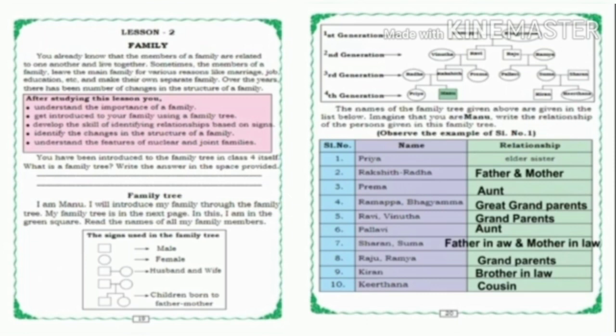Fourth generation: Rada, Rakshid, Prema, Pallavi, Summa, Sharan. And the relationships: Priya is elder sister; Rakshid and Rada are father and mother; Prema and Ramappa-Bagyamma are great grandparents; Ravi-Vinuta are grandparents; Pallavi and Sharan, Summa are father-in-law and mother-in-law; Raju-Ramya are grandparents; Kiran is brother-in-law; Kirtana is cousin. According to Manu's family tree, these are the relations.